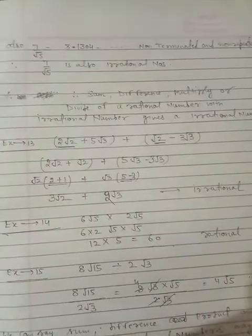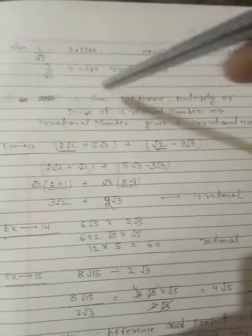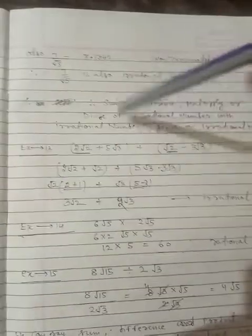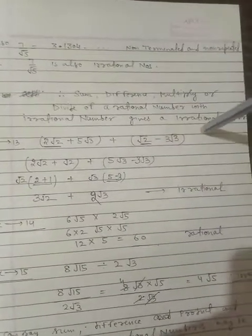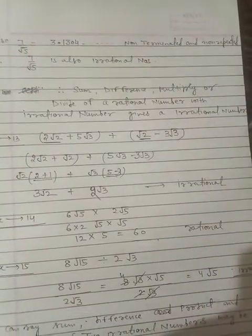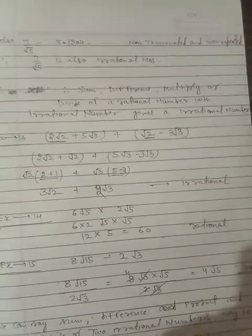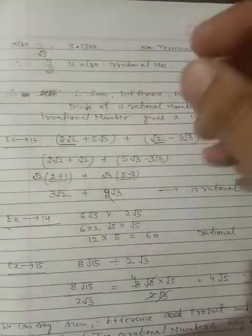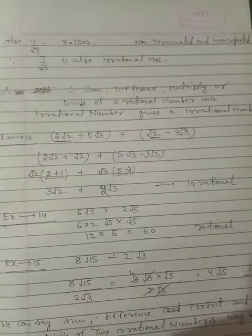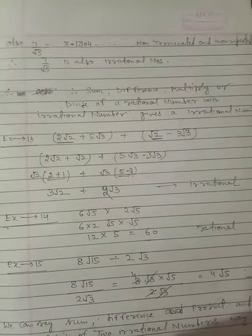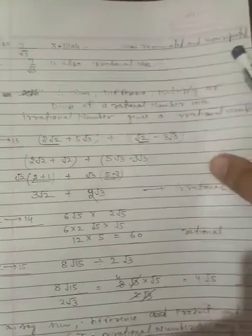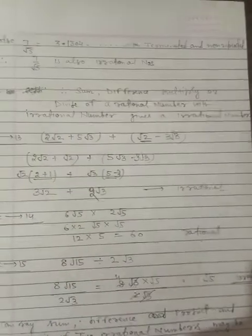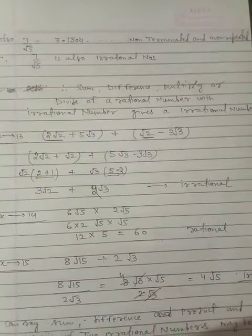Therefore, we can say the sum, difference, product, or quotient of an irrational number with a rational number gives us an irrational number.